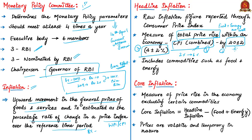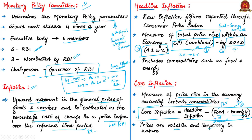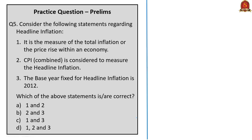Core inflation is a measure of price rise in the economy excluding food and energy components, as their prices are volatile and largely seasonal or temporary. Food includes fruits and vegetables; energy includes gas and oil. Core inflation can therefore be expressed as headline inflation minus food and energy. For prelims preparation, know the Monetary Policy Committee, headline inflation, and core inflation in particular. Have a look at the practice question to be discussed at the end of the session.